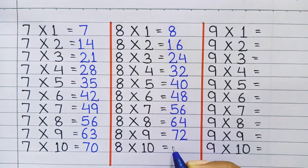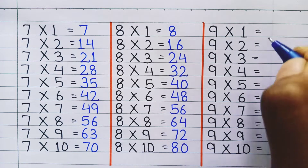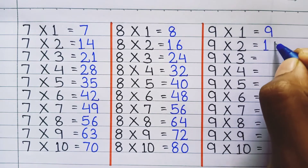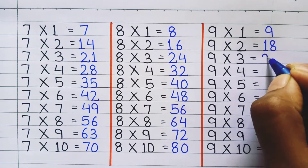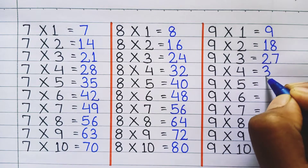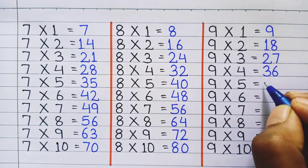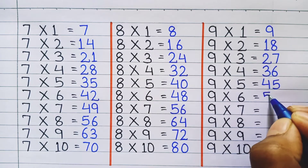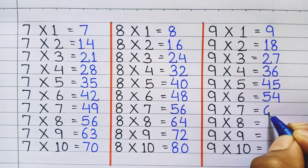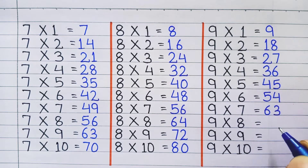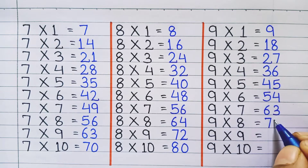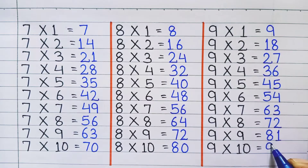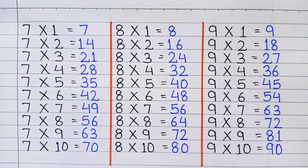8 nine's a 72, 8 ten's a 80. Table of 9: 9 one's a 9, 9 two's a 18, 9 three's a 27, 9 four's a 36, 9 five's a 45, 9 six's a 54, 9 seven's a 63, 9 eight's a 72, 9 nine's a 81, 9 ten's a 90.